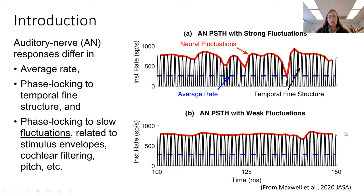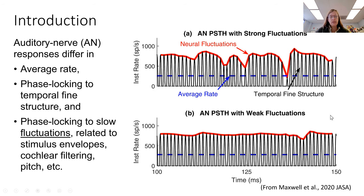At the right, you see responses of a model auditory nerve fiber to two stimuli, and the responses have the same average rate — in fact, saturated average rates. The temporal fine structure phase locking is comparable, but there are qualitative large differences in the neural fluctuations, as highlighted by the red lines.